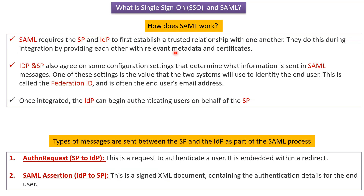One of these settings is the value that the two systems will use to identify the end user. This is called the Federation ID. The Federation ID is nothing but the end user's email address. Once integrated, the IDP can begin authenticating users on behalf of the SP.